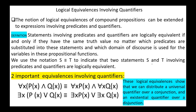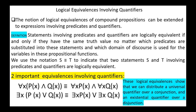There are two important equivalences involving quantifiers. First, for all x, P(x) ∧ Q(x) is equivalent to: for all x, P(x), conjunction for all x, Q(x). And the second equivalence: exists x, P(x) ∨ Q(x) is equivalent to: exists x, P(x), disjunction exists x, Q(x). These logical equivalences show that we can distribute a universal quantifier over a conjunction, and we can distribute an existential quantifier over a disjunction.